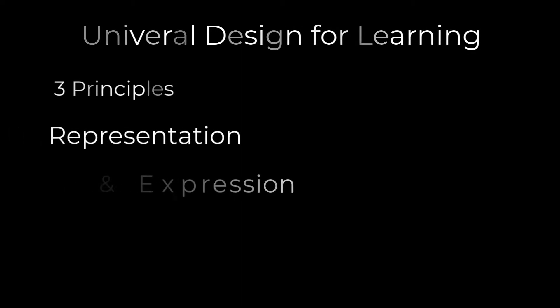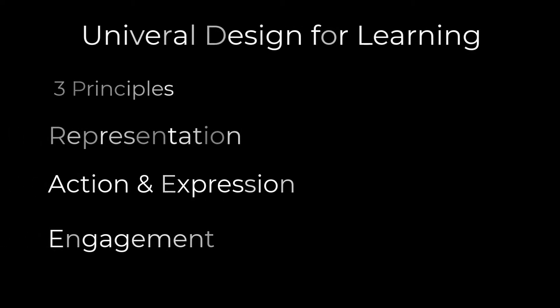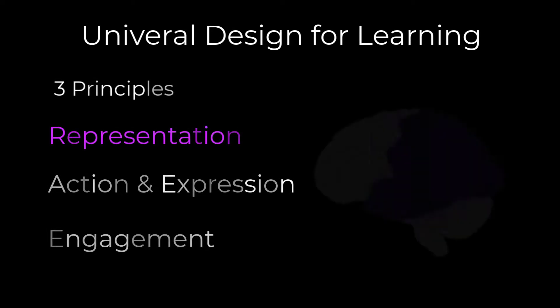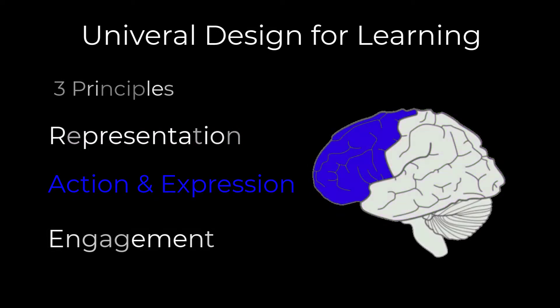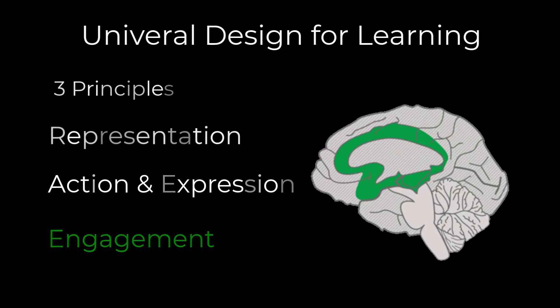The three principles of Universal Design for Learning each address specific aspects of learning and how we process information. They are the principle of representation, which focuses on recognition networks in the mind, the principle of action and expression, which focuses on strategic networks in the mind, and the principle of engagement, which focuses on effective networks in the mind.